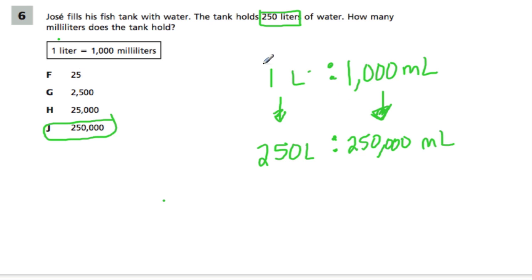But when you have this original ratio, the one they give you, realize from the start that whatever amount of liters there are, there should be 1,000 times more milliliters.